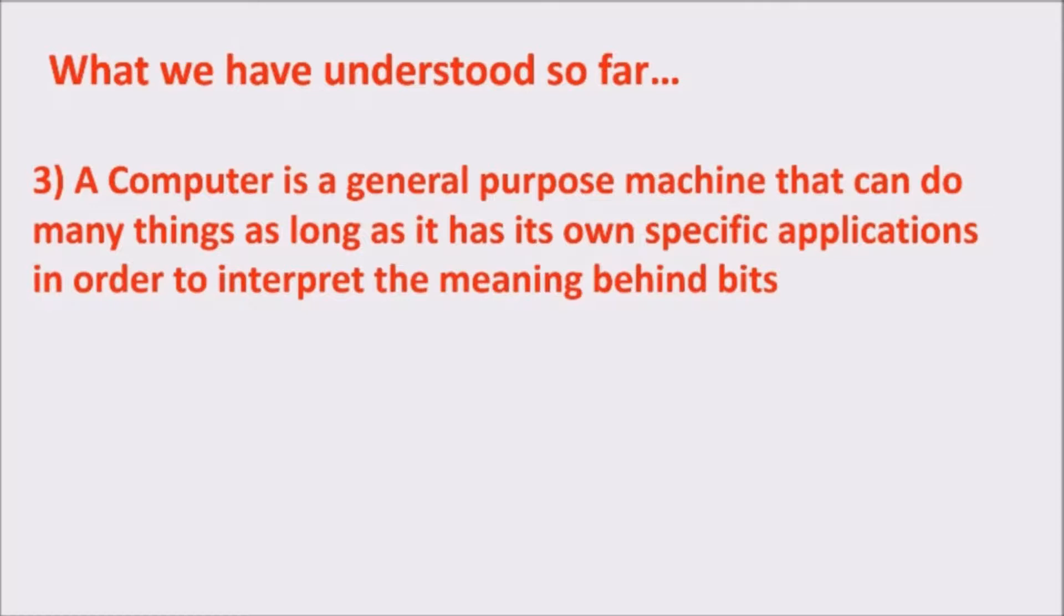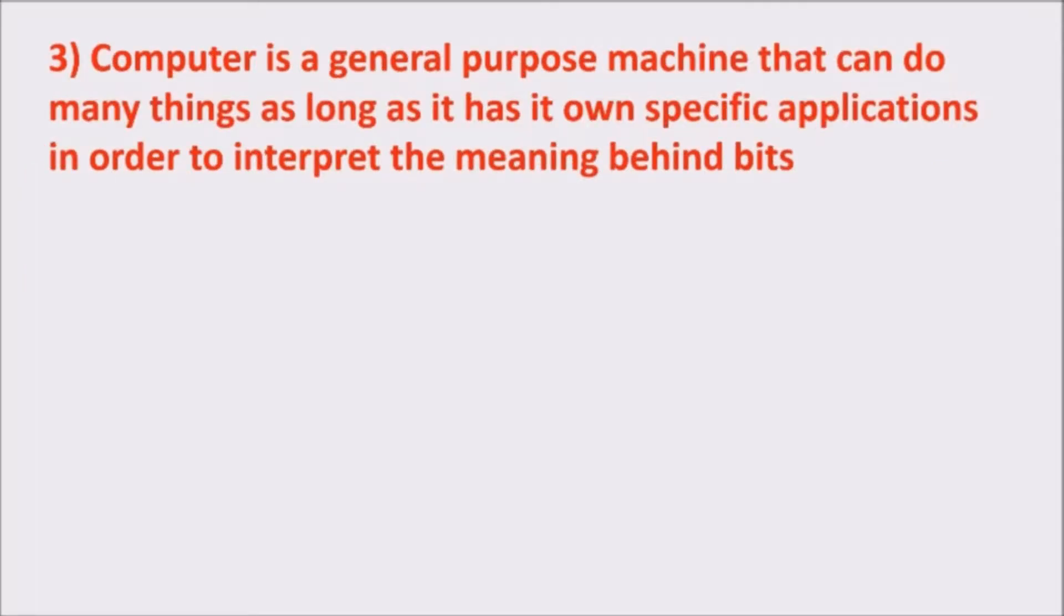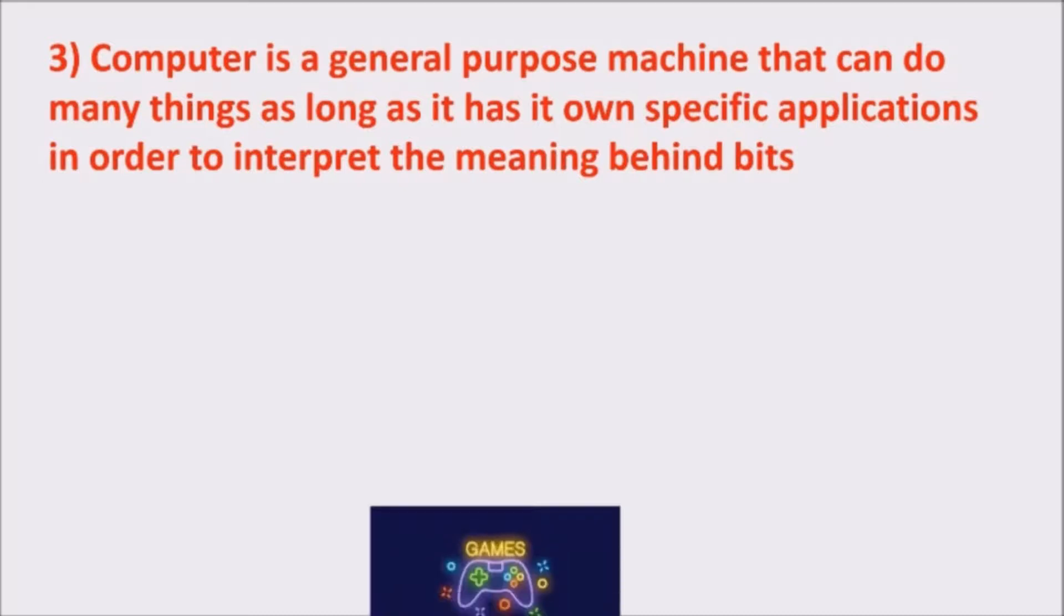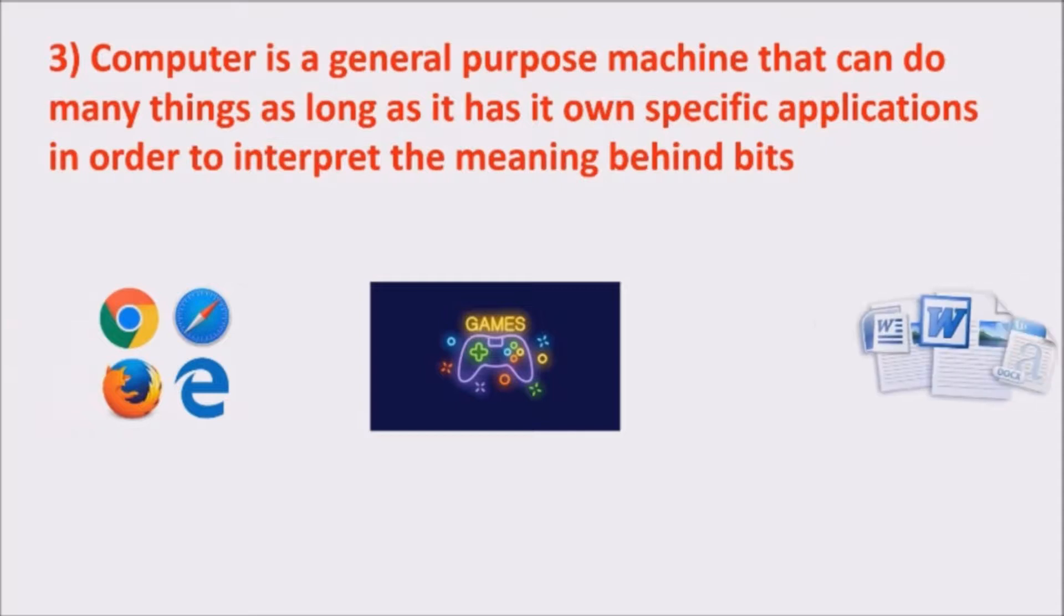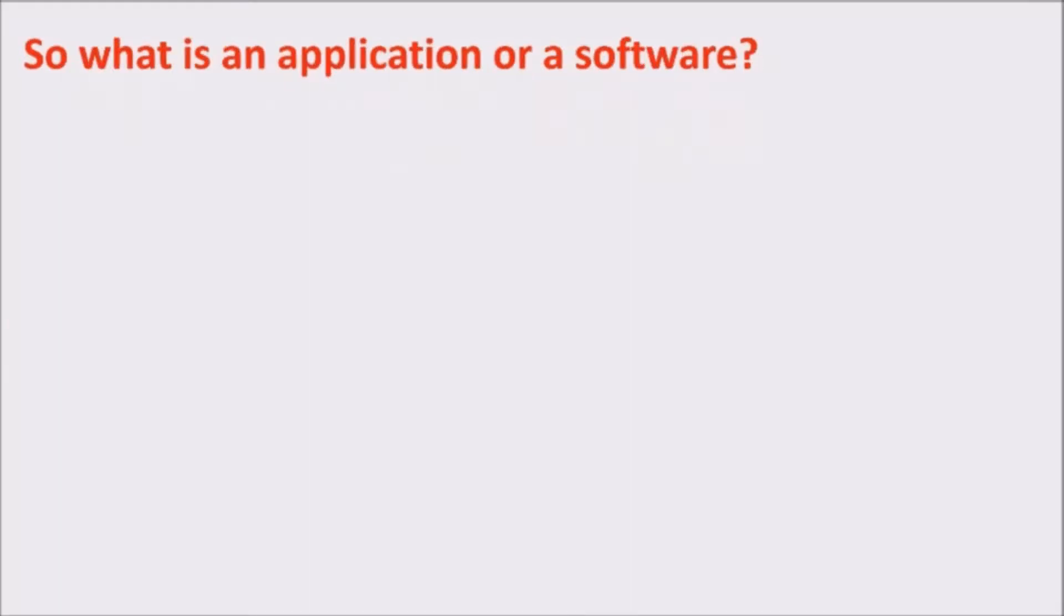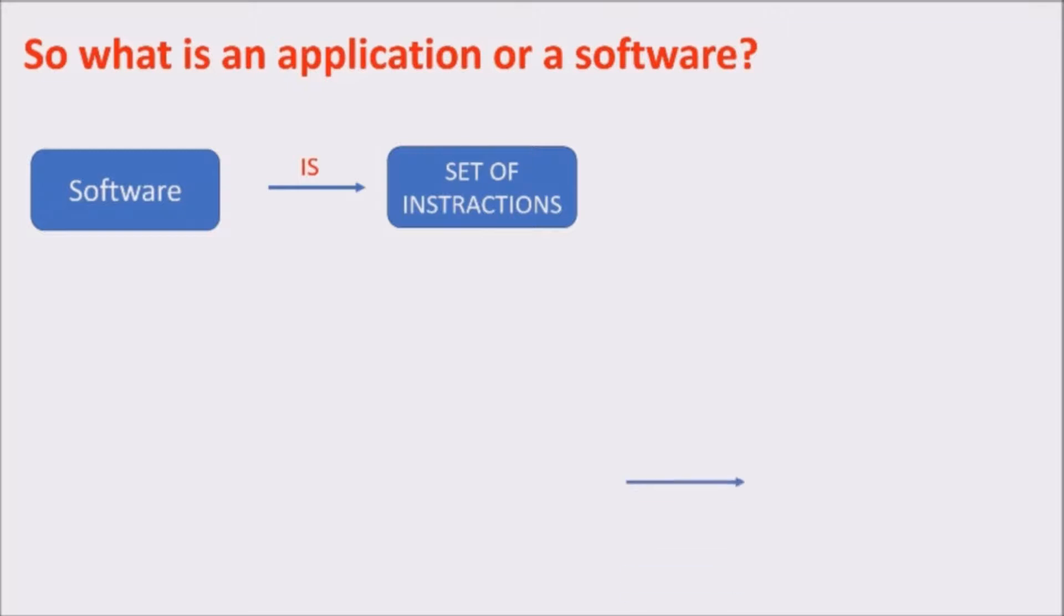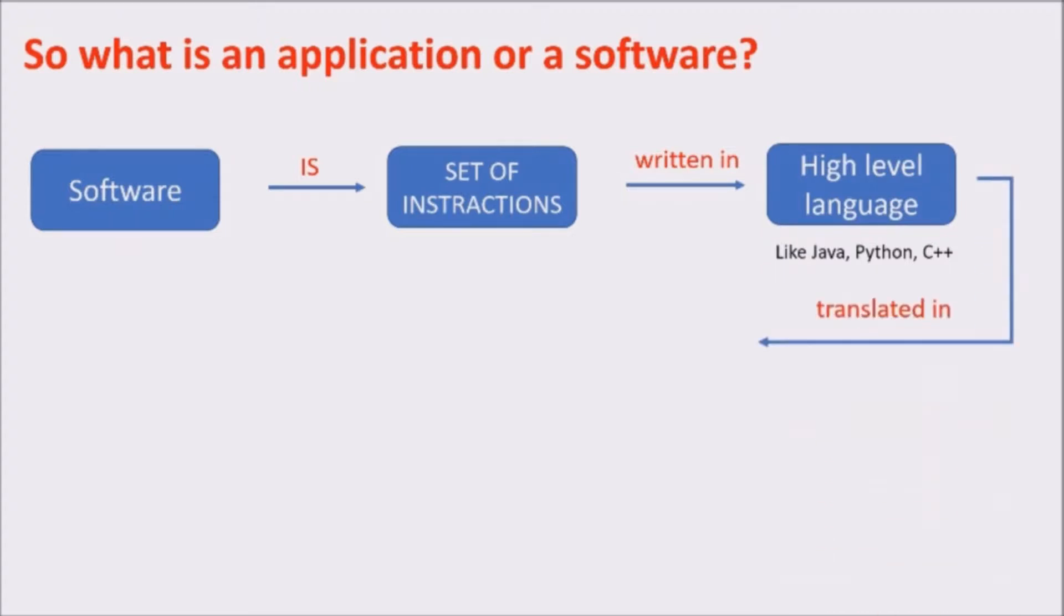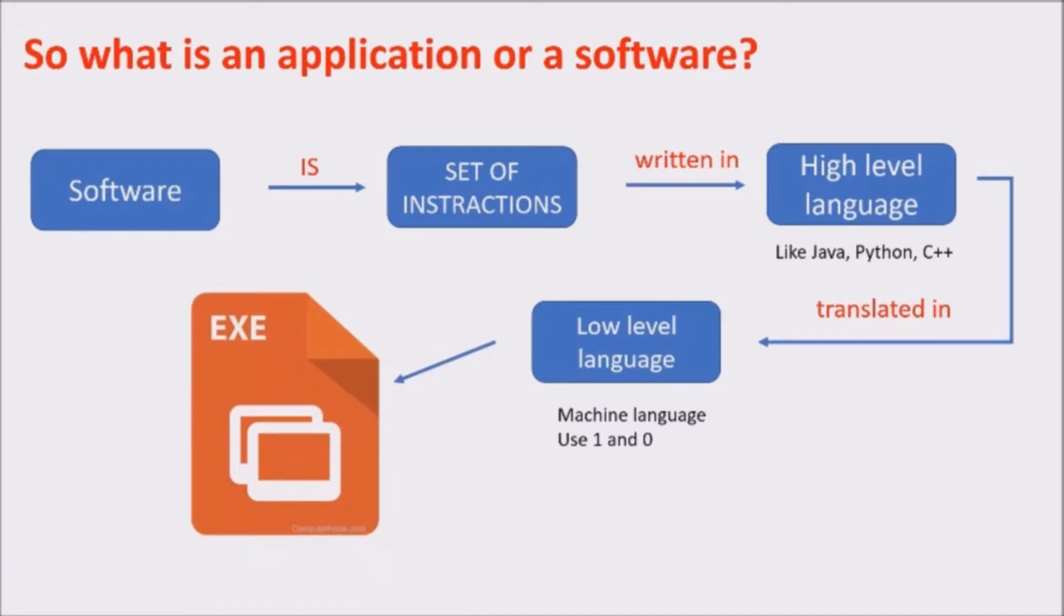Let's think about the third point. This means the software enables the computer to be a game machine, a web browser, a word processor and perform a wide range of functions. So, what is an application or a software? Basically, it's a set of instructions written in a language similar to a human language. But computers understand and manage just bits. So, it has to be translated in a machine language with just zeros and ones. These are the executable files, which probably you heard something about.